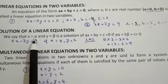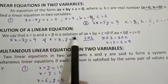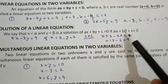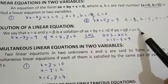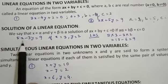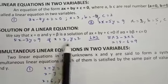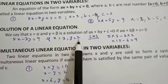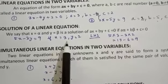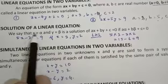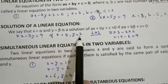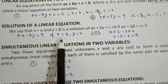Then the next technical word is solution of a linear equation. We say that x equal to alpha and y equal to beta is the solution of ax plus by plus c equal to 0, if a·alpha plus b·beta plus c equal to 0. Suppose I have a linear equation in two variables: 5x minus 3y equal to 9. If I put the value of x as 3 and y as 2, I will find out the LHS and the RHS will be coming equal, and that means x equals 3 and y equals 2 are the solution of the linear equation 5x minus 3y equal to 9.